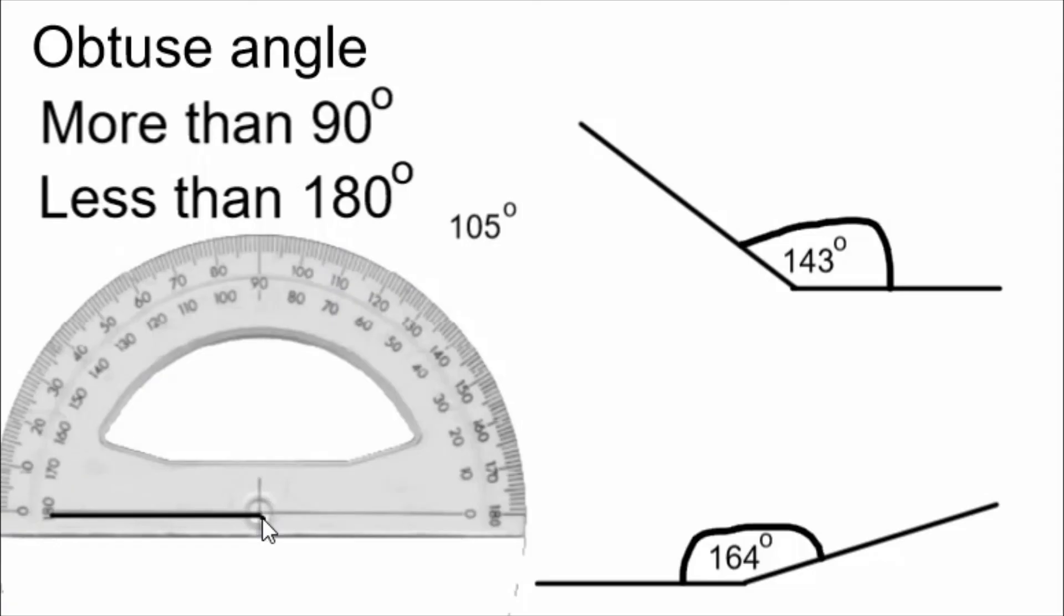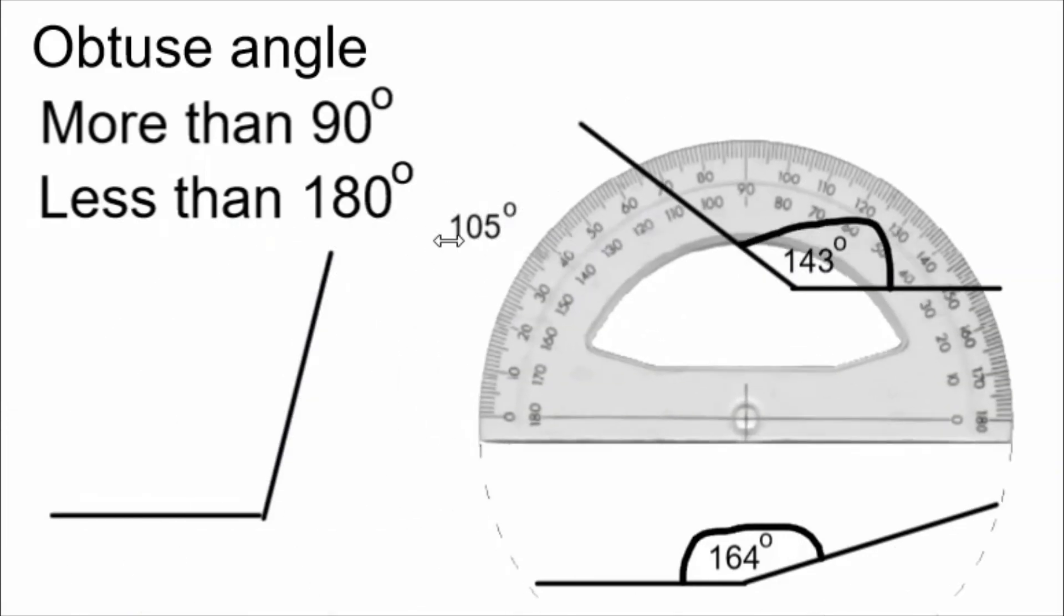I draw a line from the zero dot through 105 degrees on the protractor. I move the protractor out of the way, and I label my angle. The arc is not that bad this time.